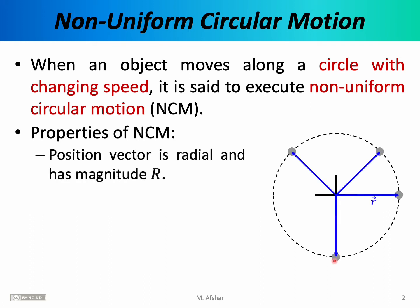The position vector is radial and has magnitude r. The position vector is quite simple — it's the same as in uniform circular motion. It points from the center of the circle to the location where the object is, and by virtue of having a circle, the magnitude of the position vector, denoted by lowercase r, is simply the radius of the circle.